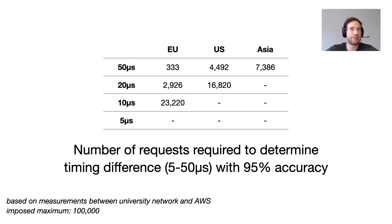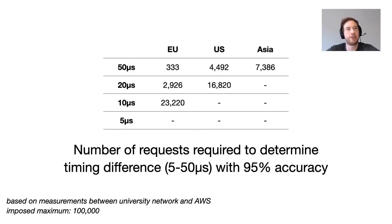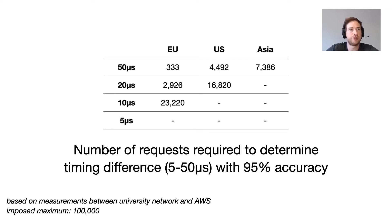We also see that the longer the network path, the more requests are required. So between our server and the server located in the US, we can only determine a timing difference of up to 20 microseconds. And going even further, to Asia, we could only determine a timing difference of 50 microseconds requiring more than 7,000 requests.